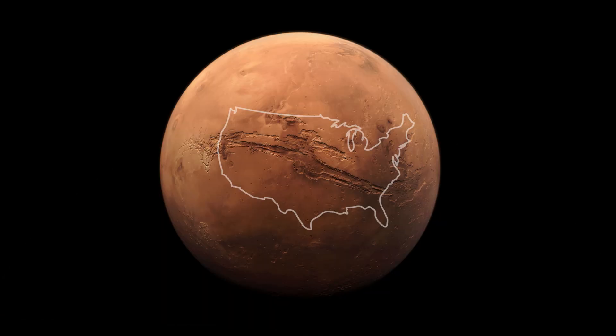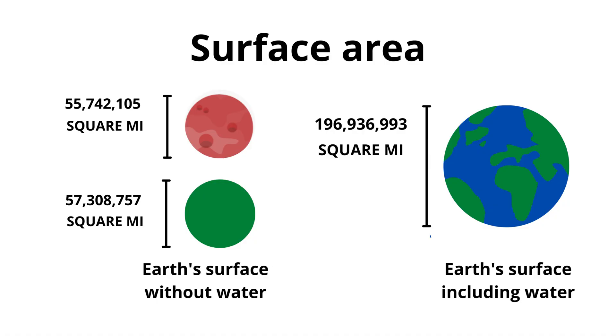Number two: Surface area. The surface area of Earth is approximately 510 million square kilometers, while the surface area of Mars is 144.7 million square kilometers.